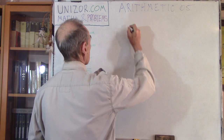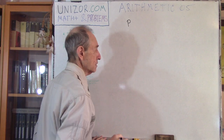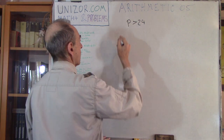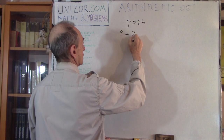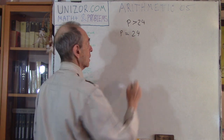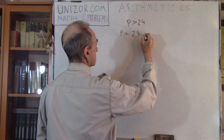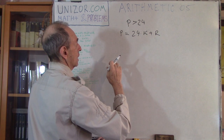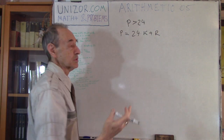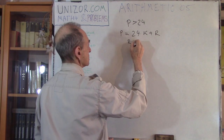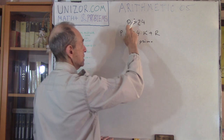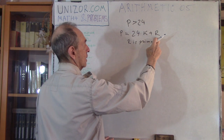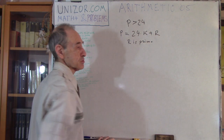The first problem is the following. Consider you have a prime number P which is greater than 24. I'm dividing this prime number P by 24, which means it's represented as P = 24q + R, where R is a remainder. What I would like to prove is that R is prime as well. So P is prime, I divided it by 24 with a remainder, and I'm stating that the remainder is supposed to be a prime number.